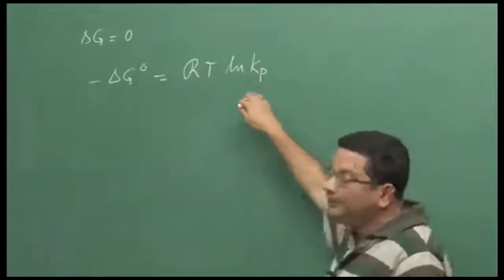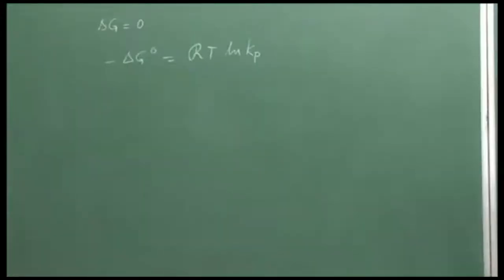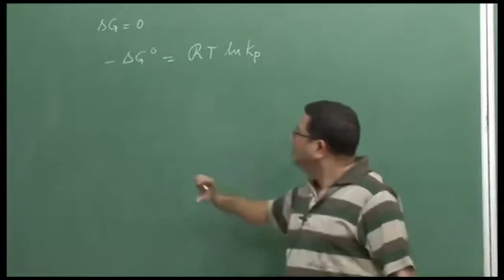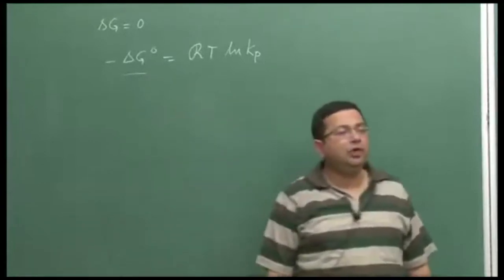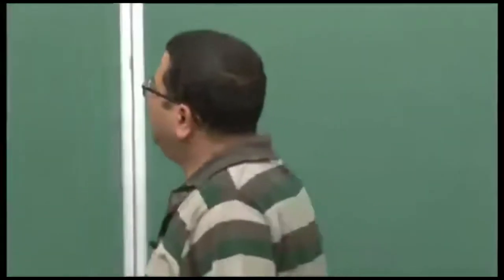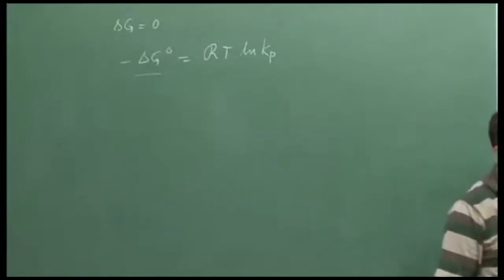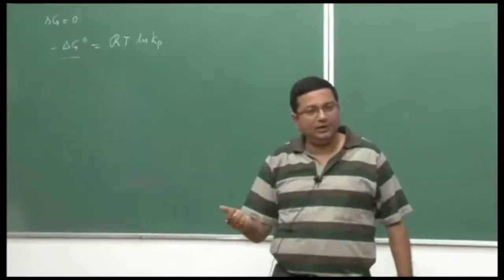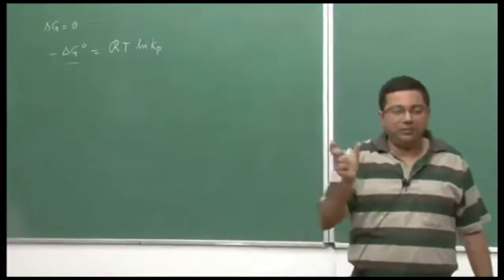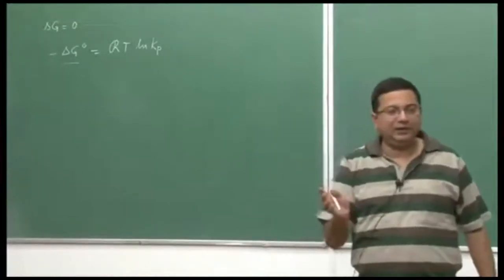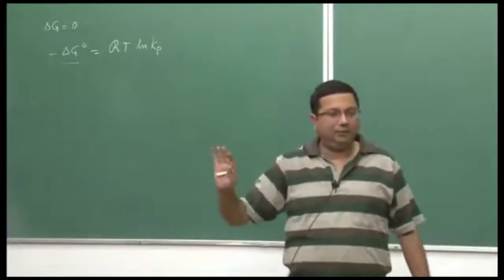This is defined for standard pressure, so P naught is 1 atmosphere. We have also shown that the Gibbs free energy for standard state can be obtained by knowing the molar Gibbs free energy of formation of different species. We have shown that for formation reactions, since we know the Gibbs free energy of formation, we can estimate Kp for formation reactions. Then for a complex reaction, by combining different reactions, we can get the expression for Kp for more complex reactions.